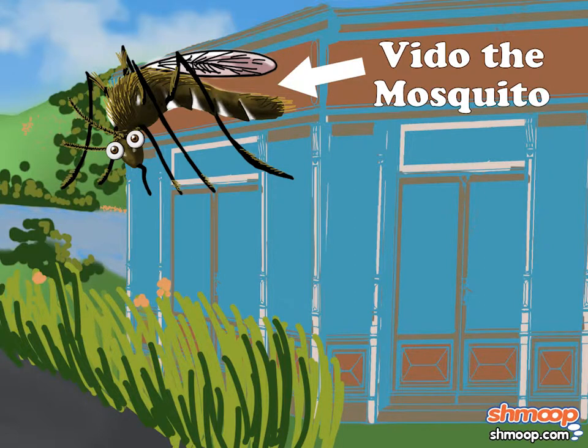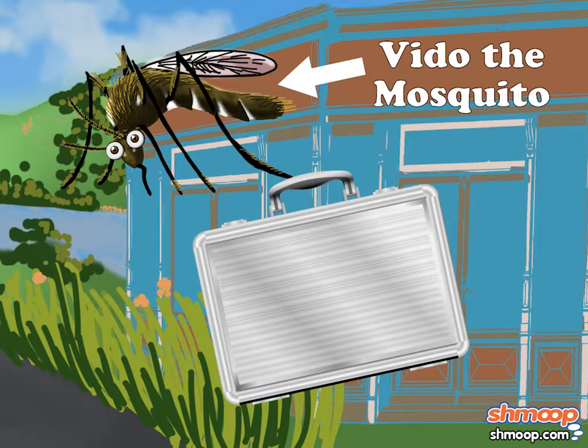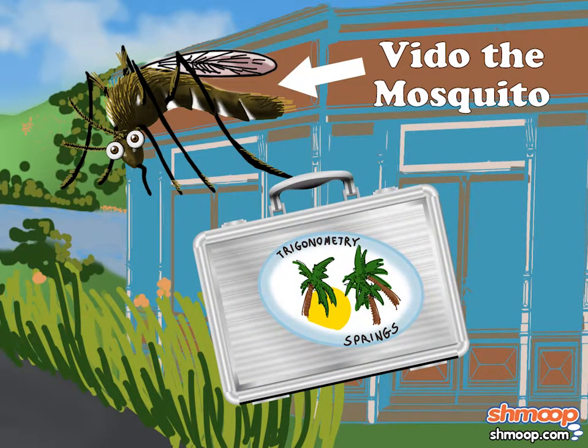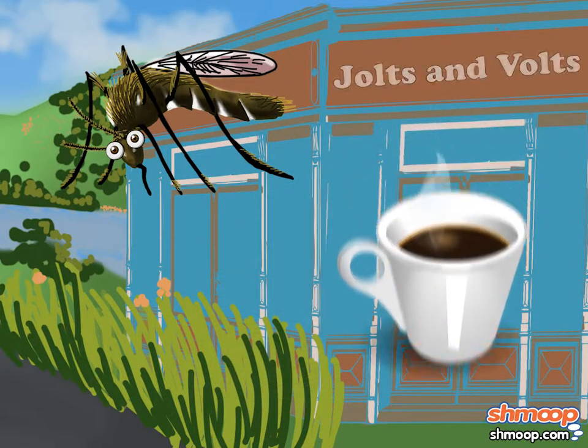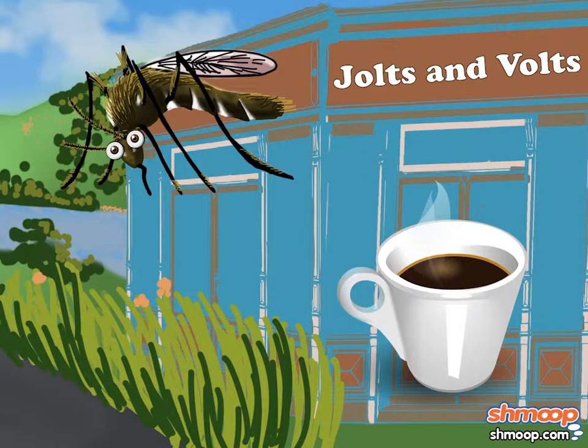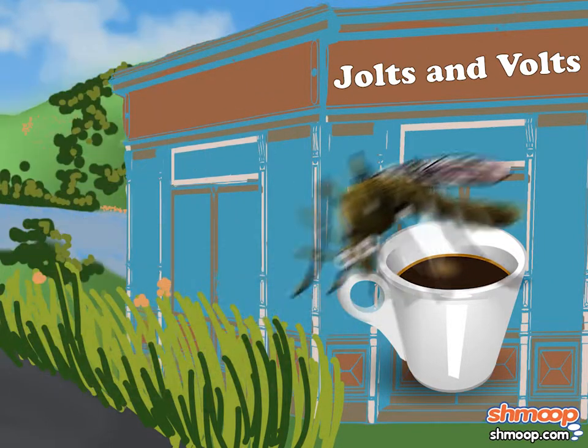Vito the Mosquito is exhausted after returning from his business trip to Trigonometry Springs. Vito desperately needs an espresso. At Jolts and Volts Coffee, he orders his much-needed triple-latte mocha frappe.